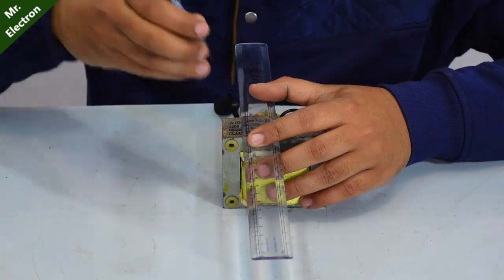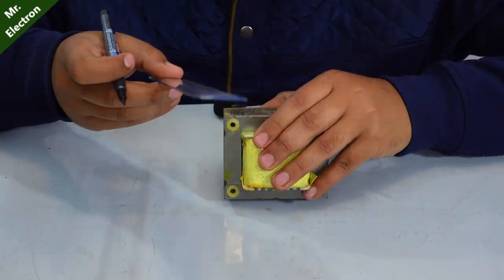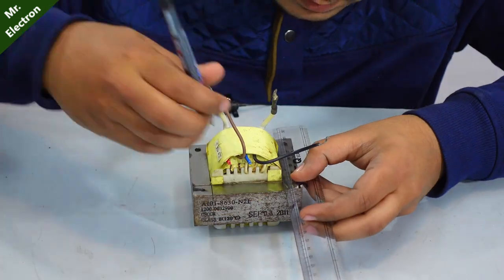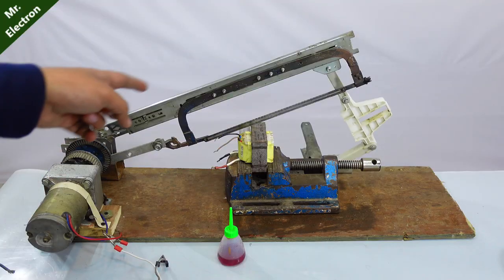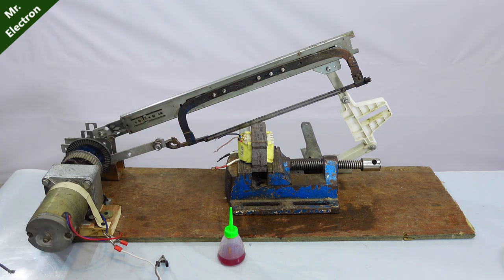Here I'm making some markings so that I can cut it from these two parts. Many of you might already be familiar with the hacksaw that I made in one of my previous videos. Link is provided in the description. I'm going to use the same hacksaw to cut off the core of my transformer.